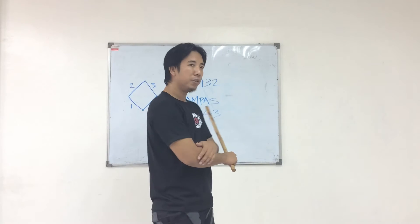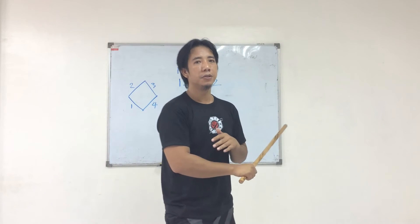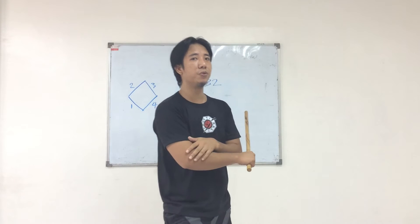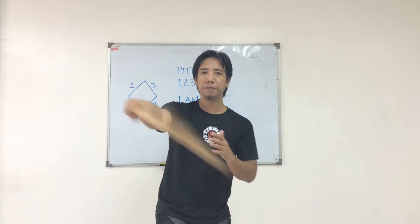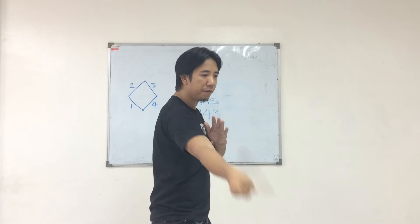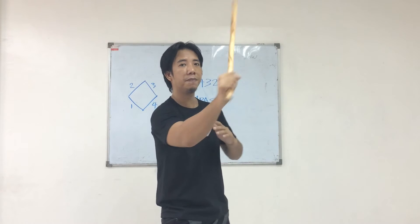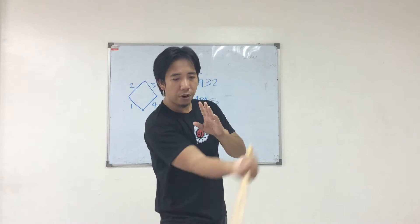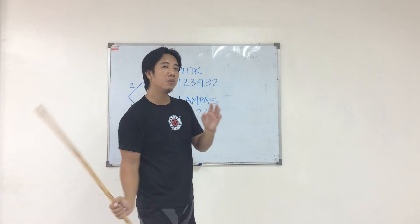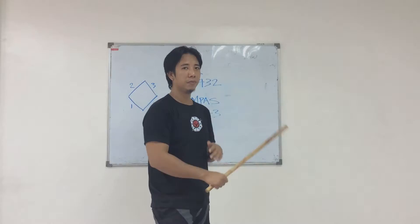Now let me show you the lampas — we're going to do one two three two four three. The reason why it's one two three and then two four three is because when I do number one, it goes to the open position, and then this is number two open again, and then number three. After number three I cannot do number four directly, so I have to go to number two again, and then I can do number four and then number three.